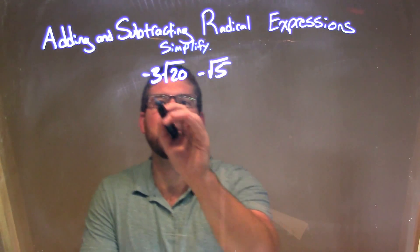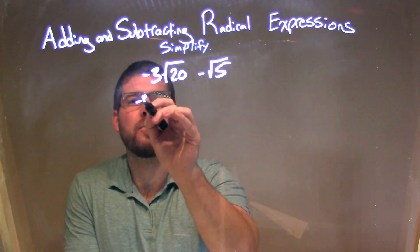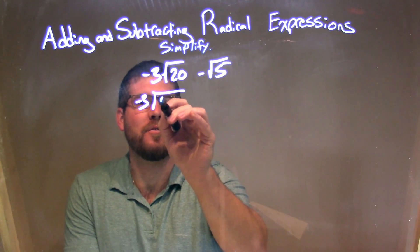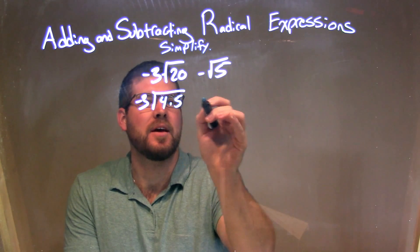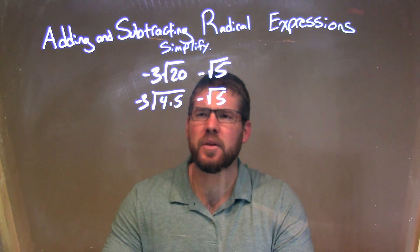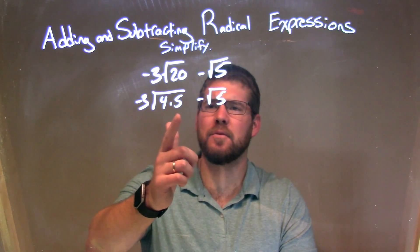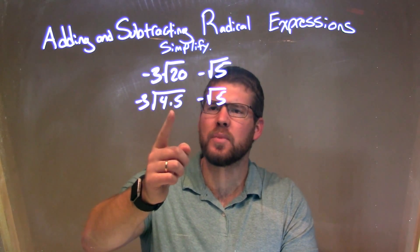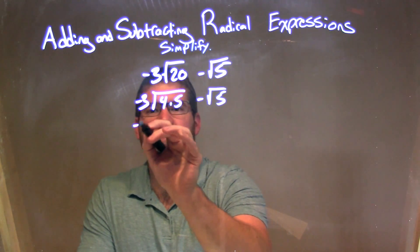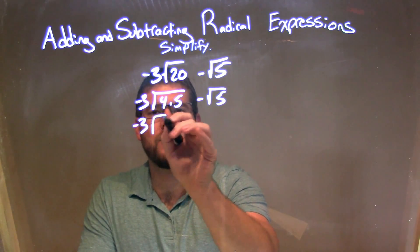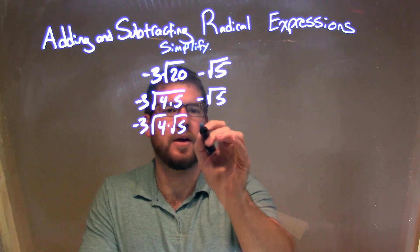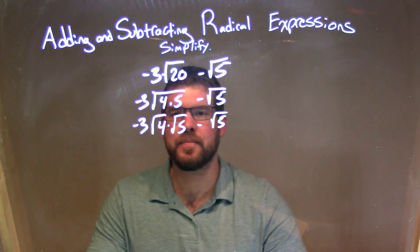Well, 4 times 5, right? So negative 3 times the square root of 4 times 5, then we have minus the square root of 5 right there. Now we have 4 times 5 being that 20. So multiplication inside of the square root, we can separate that. So we have negative 3 times the square root of 4, times the square root of 5 — multiplication there — minus the square root of 5.